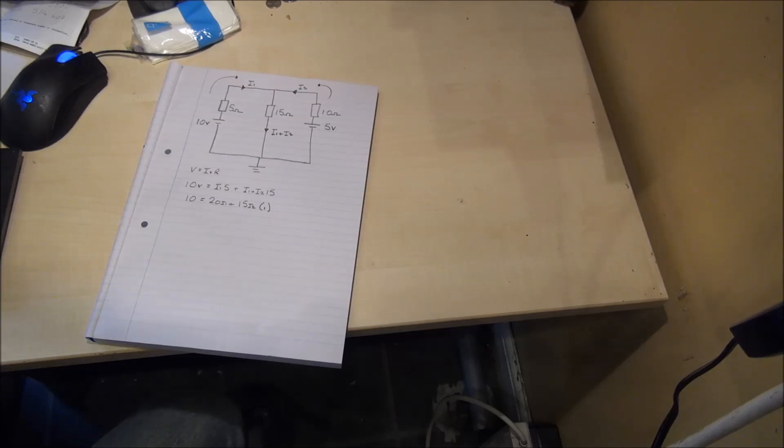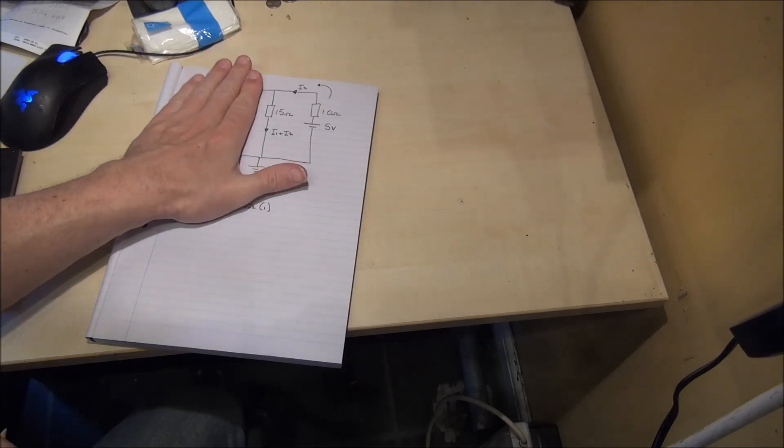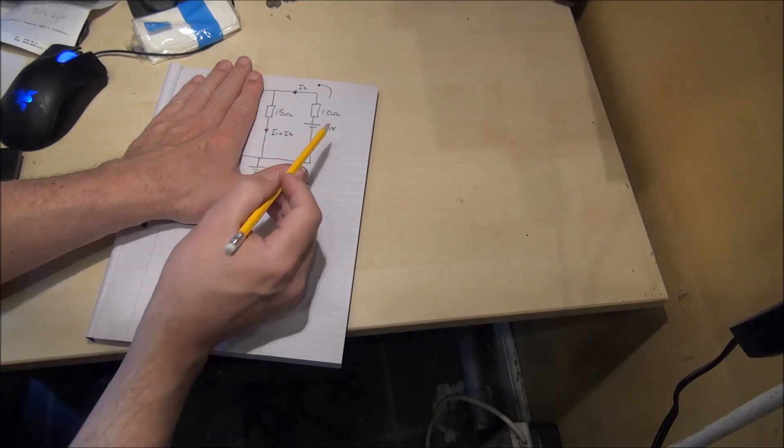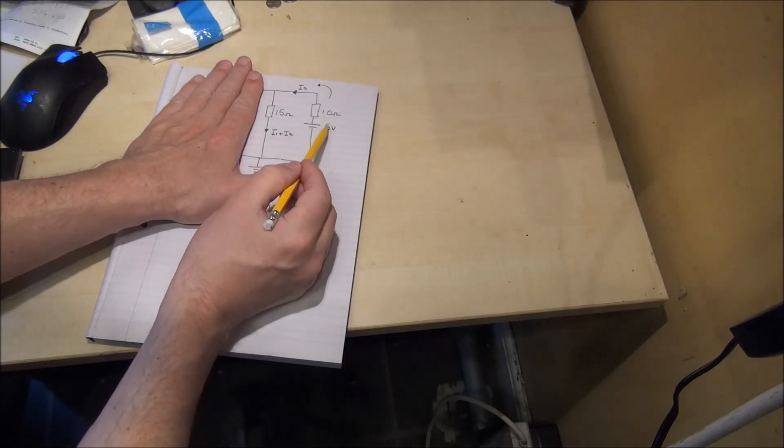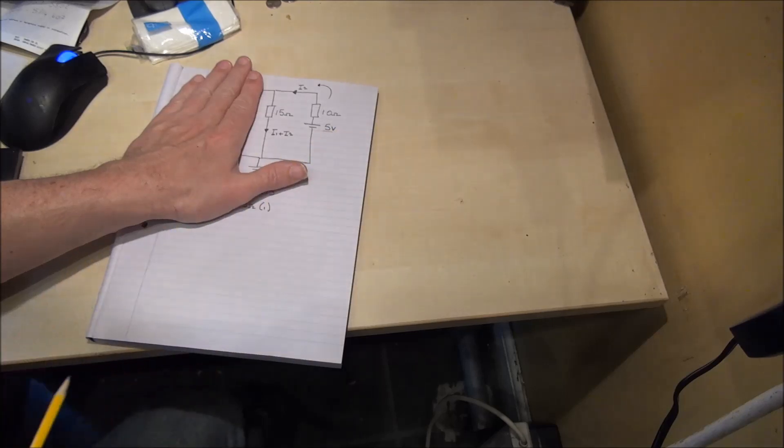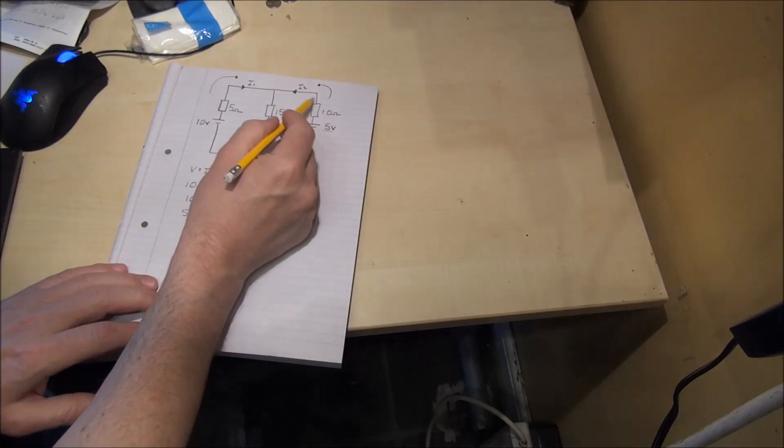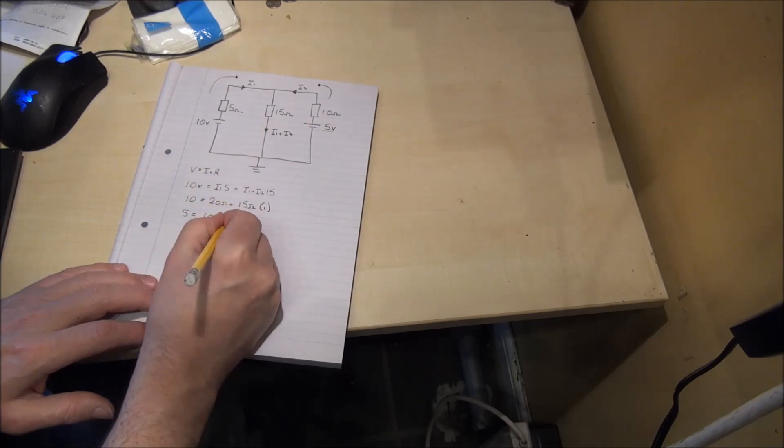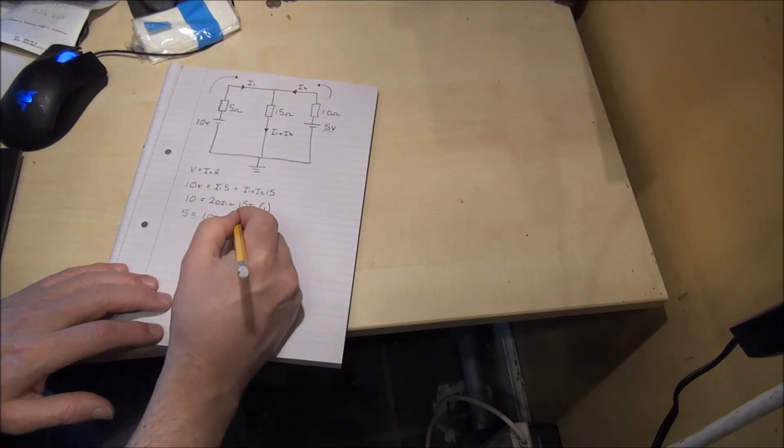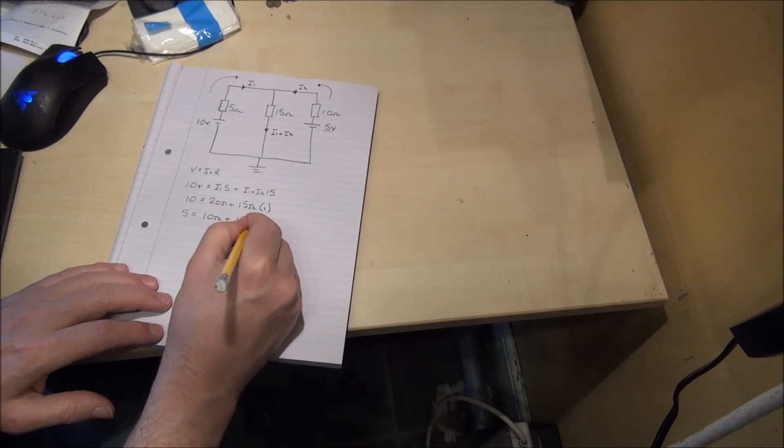We then carry out exactly the same operation with the other half of the circuit. We pretend that the left hand side of the circuit is not there and we do the same thing with this voltage drop here. 5 is equal to 10 I2 plus, once again, 15 I1 plus I2.